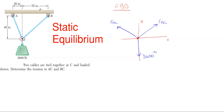This particular problem is utilizing dimensions for our cables instead of degrees with the horizontal or vertical. When you're utilizing dimensions instead of degrees, you just create a little triangle and throw on those dimensions. For FAC, we have a vertical distance from C up to A of 48 inches and a horizontal of 20 inches. For FBC, we have the same vertical distance of 48 and a horizontal of 55.